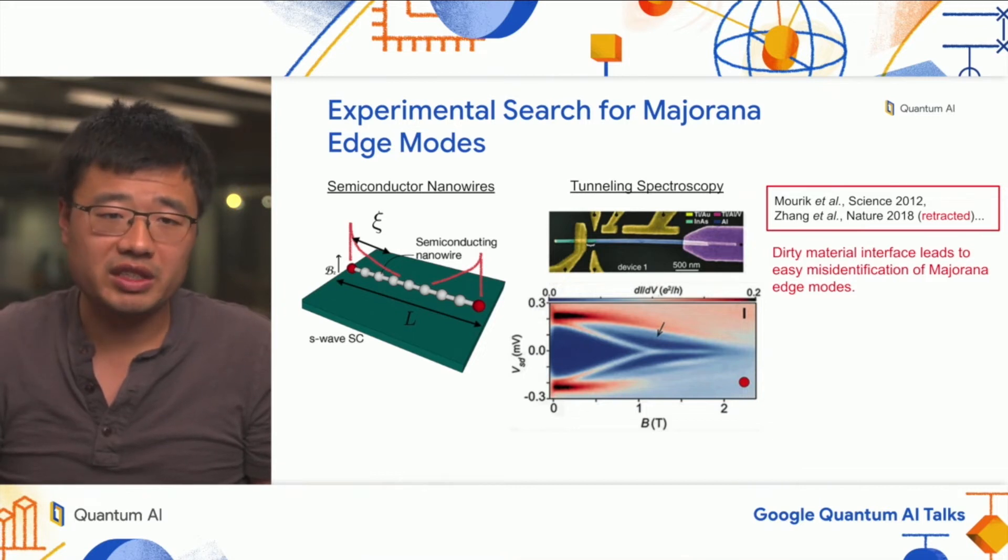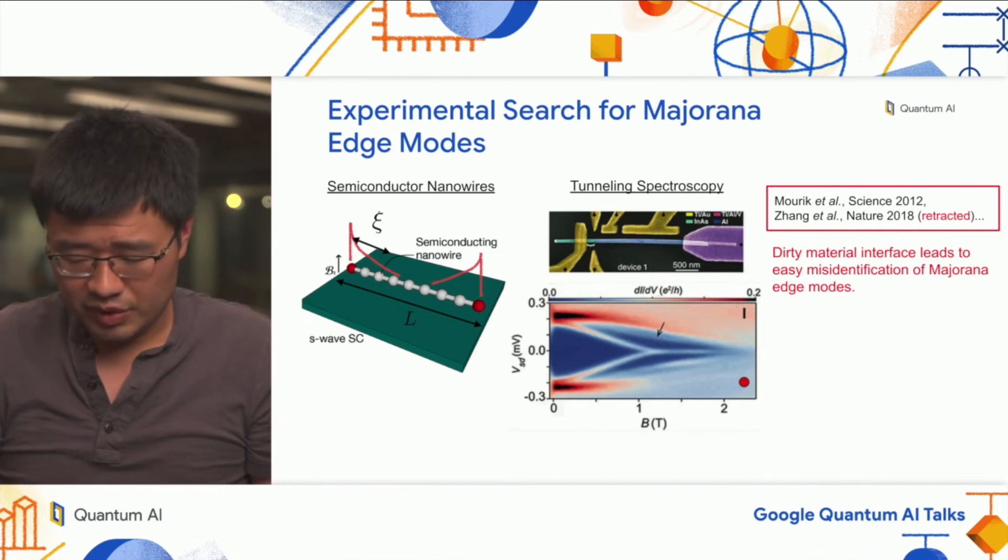Because of this characteristic, there has been a really intense experimental search for these things in different material platforms. One example is semiconductor nanowires, where you proximitize a piece of semiconductor nanowire with a superconducting material like aluminum, and try to realize this Kitaev chain. But the problem is that the capabilities are quite limited. Typically, people search for these edge modes by measuring current, where you see a zero bias peak. But because of the dirtiness and low mobility of these transistors, there can be a lot of localized states that are not Majorana edge modes but can be misidentified.